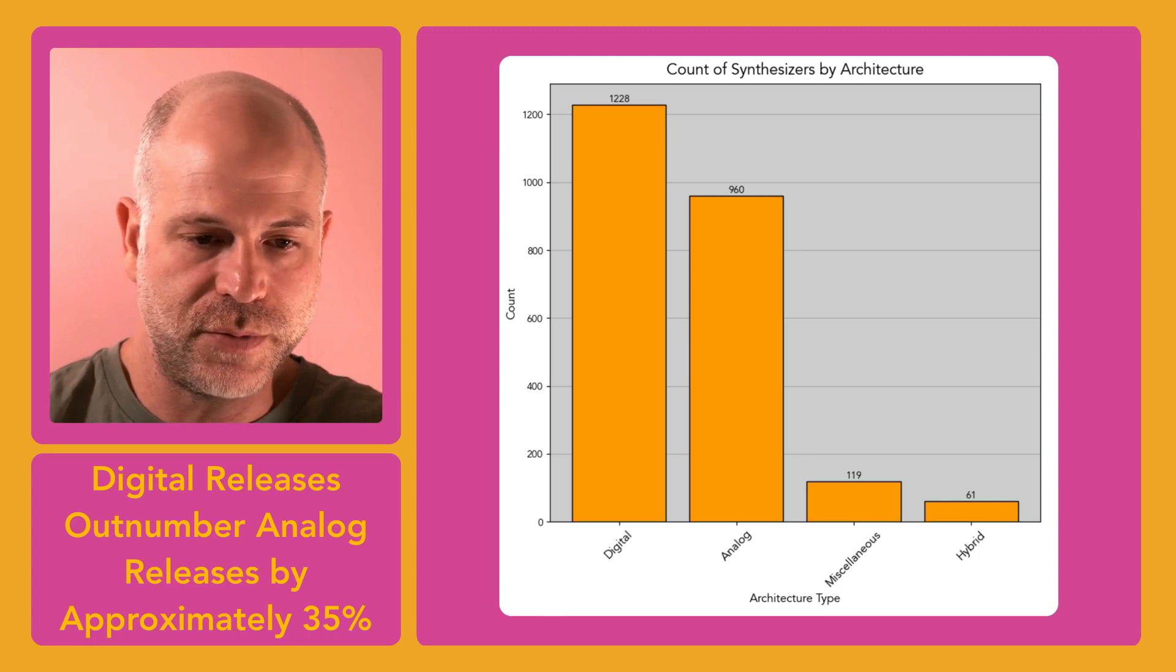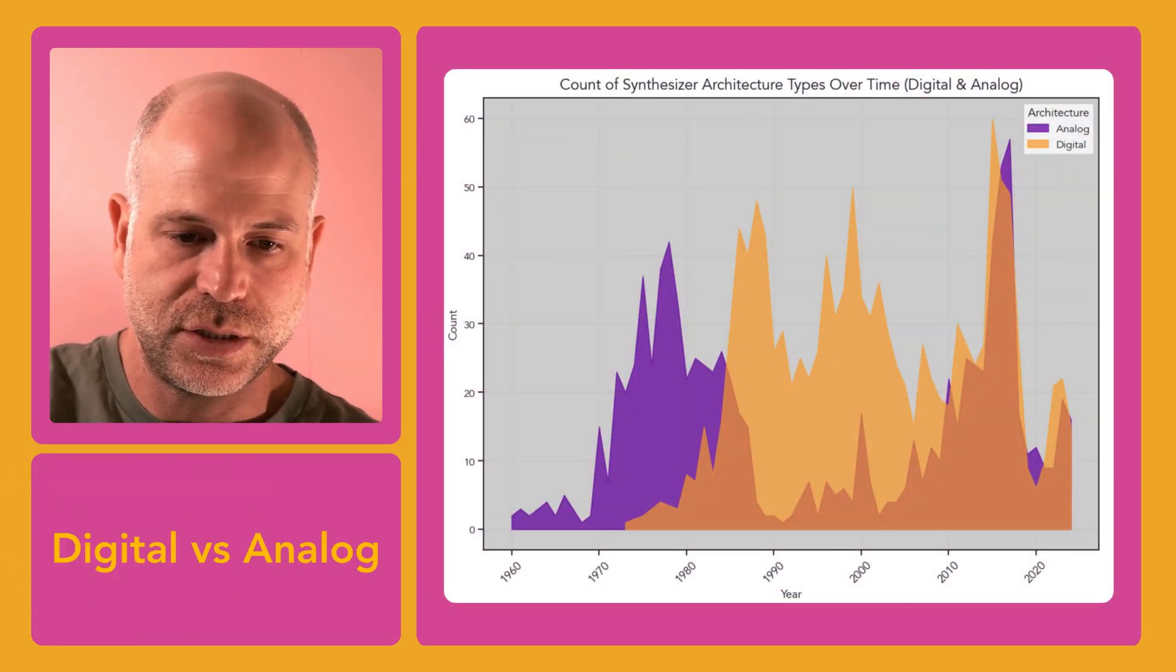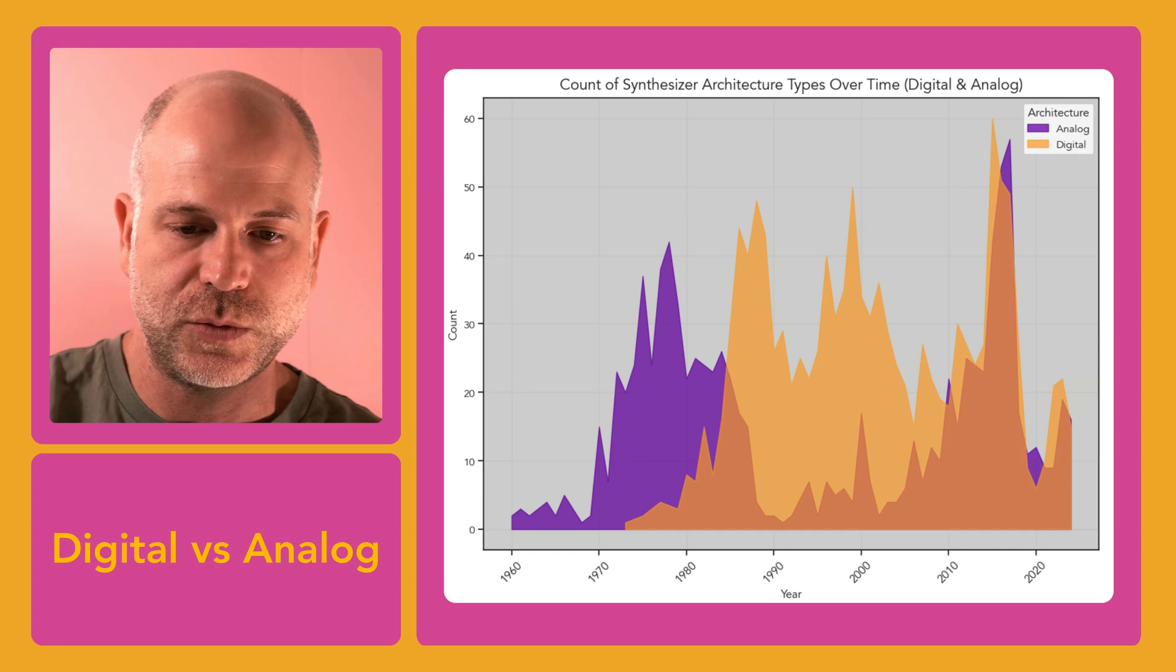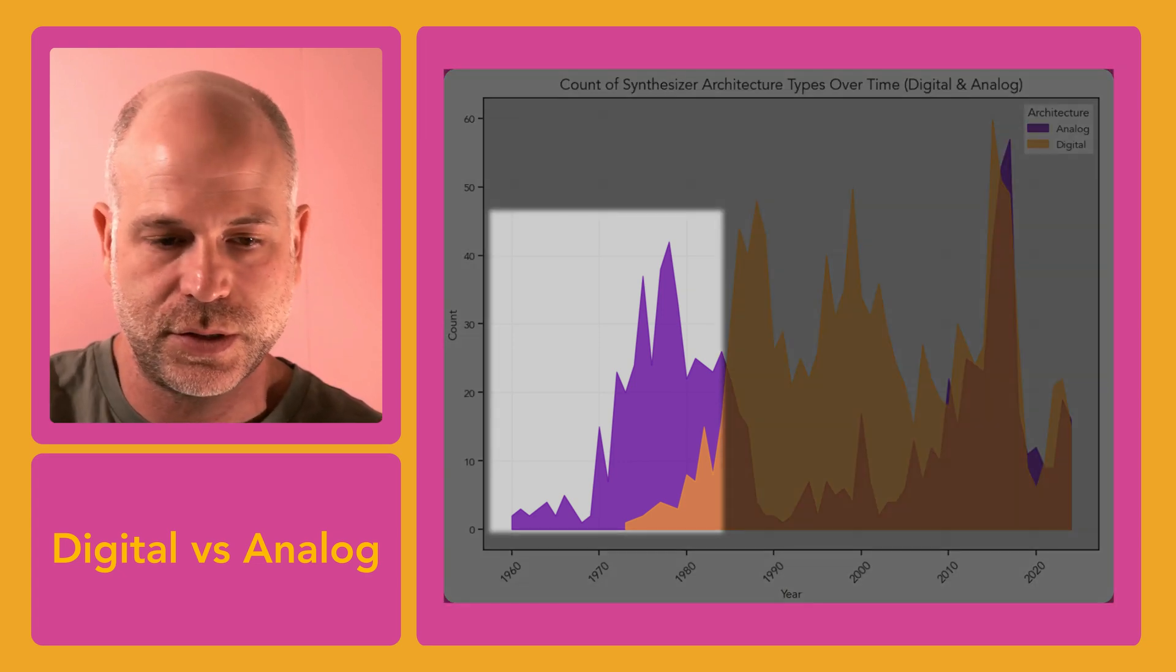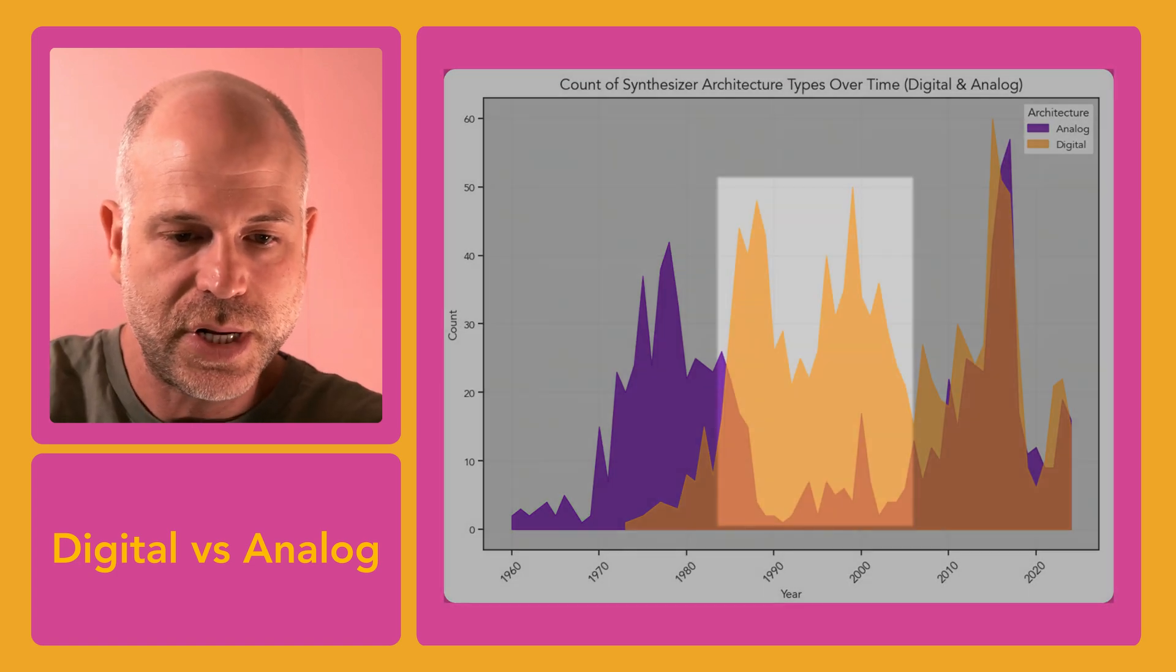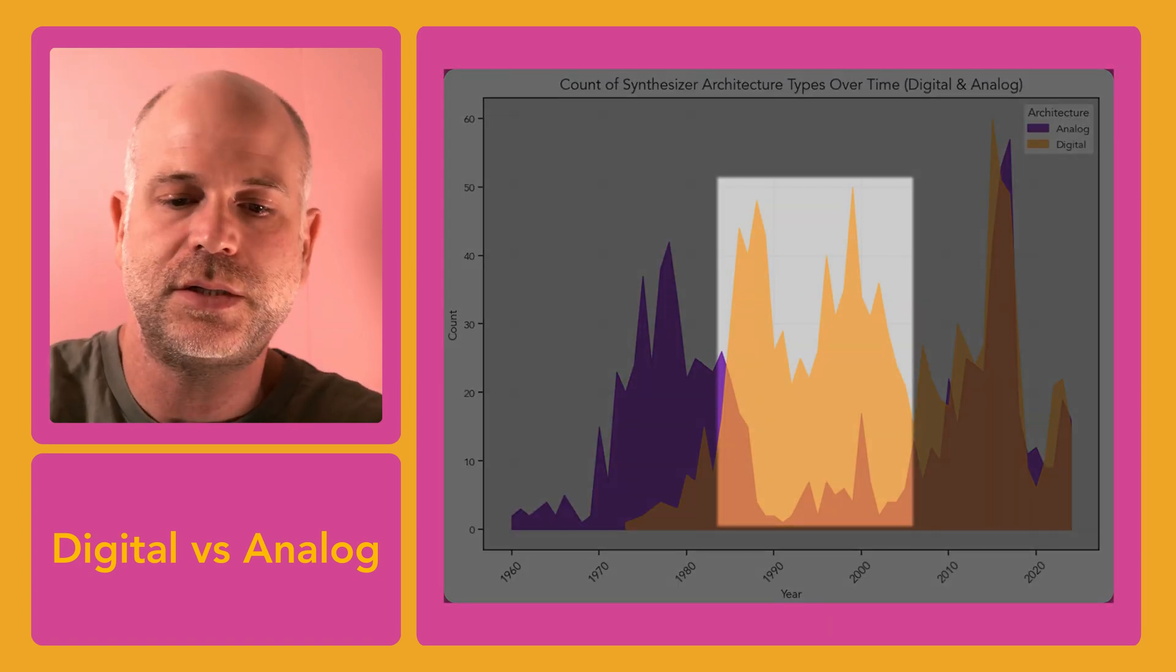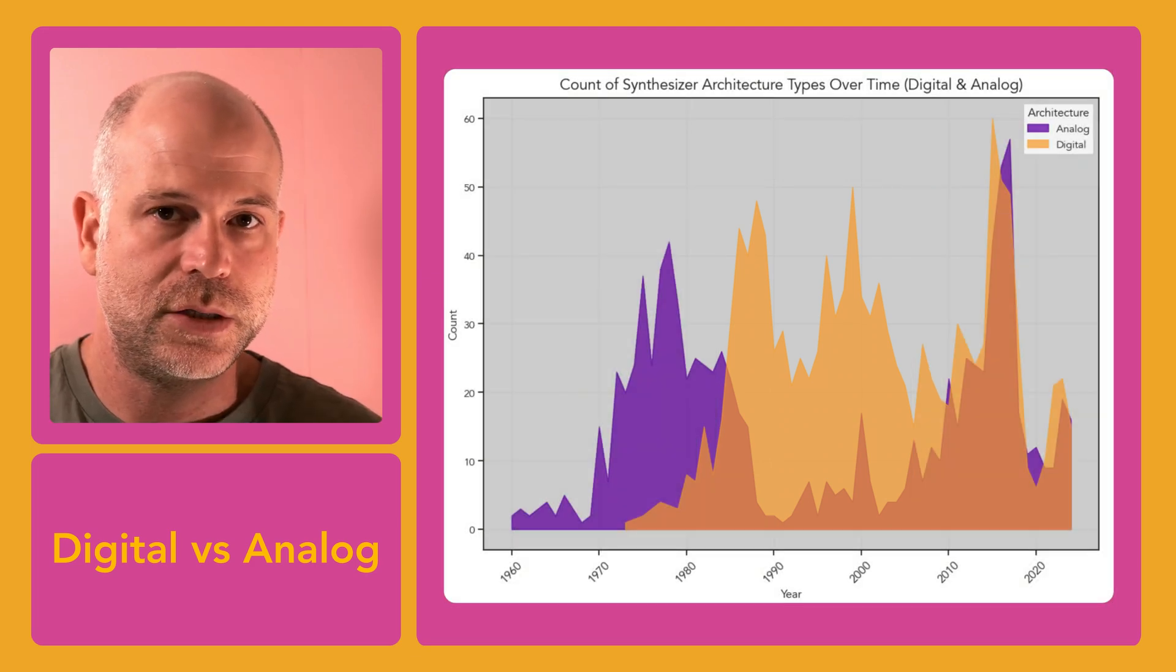Examining the trend of analog versus digital synths over time, we see that until the mid 80s, analog synths dominated the market simply because digital synths were not available yet. But from the mid 80s to the mid 2000s, digital synths exploded and took the lead, peaking in 93, which is a year which to my knowledge had no analog synth releases.